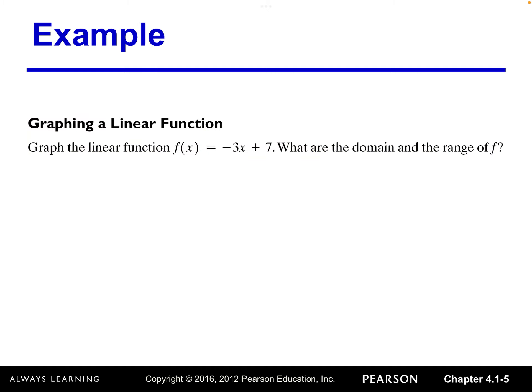Now let's look at an example. If given a linear equation f(x) equals negative 3x plus 7 and asked to graph it and then find the domain and range of this function. Let's graph it first. In order to graph a linear function, we know the graph must be a straight line. So in order to graph this straight line, we identify the slope equals negative 3 and the y-intercept is 7.